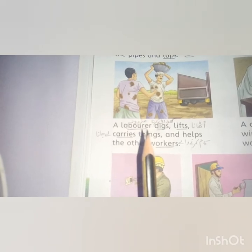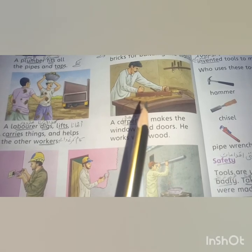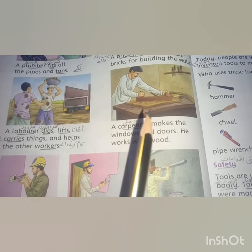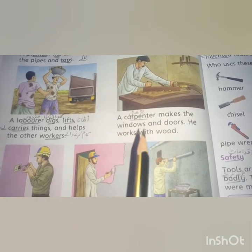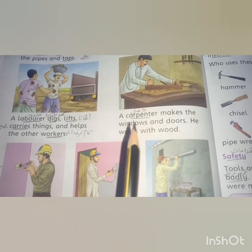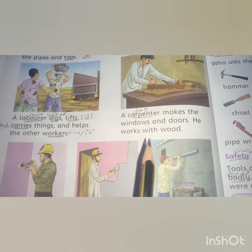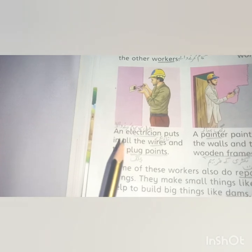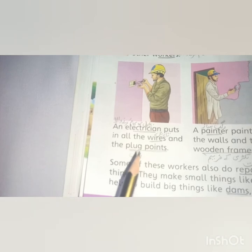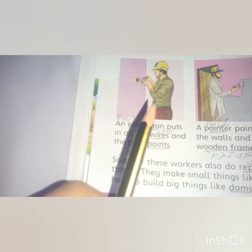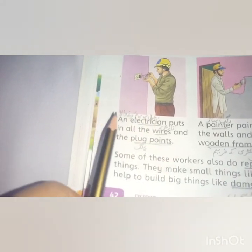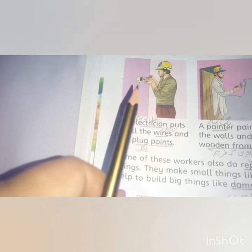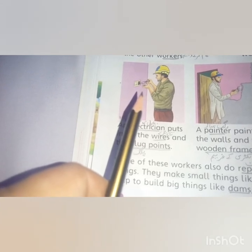Next is the carpenter — 'barhae' — you have probably seen them working with wood, making windows, doors, tables, and chairs. A carpenter makes windows and doors; he works with wood. Next, an electrician puts in all the wires and plug points. The electrician lays all the wires throughout the house, joins them, and connects them to all the plug points — all the electrical fitting in the house is done by the electrician.